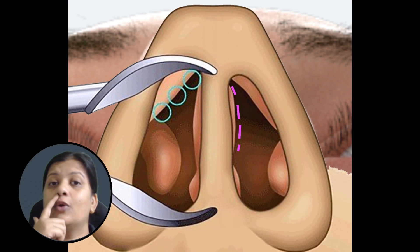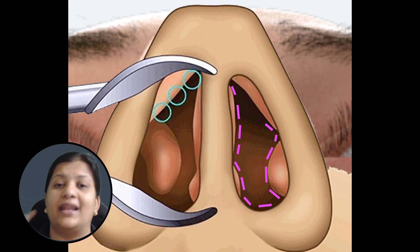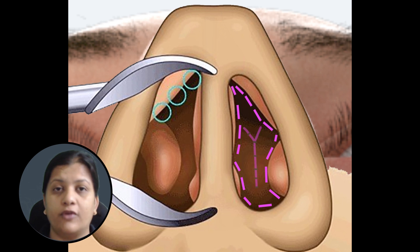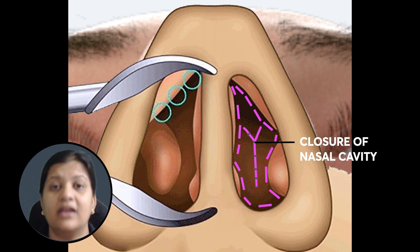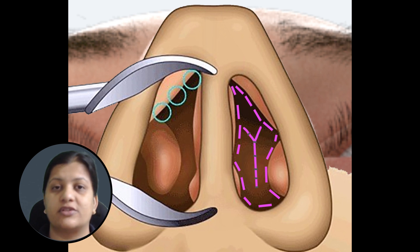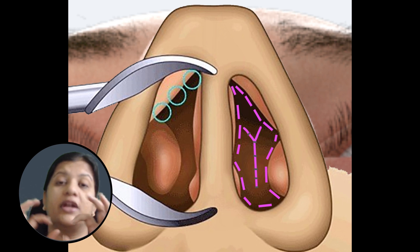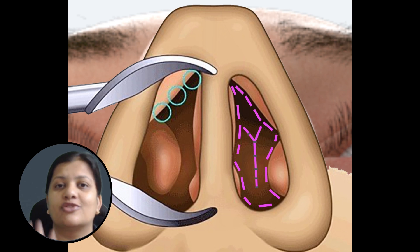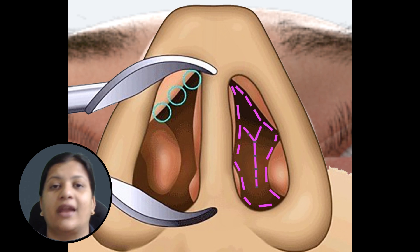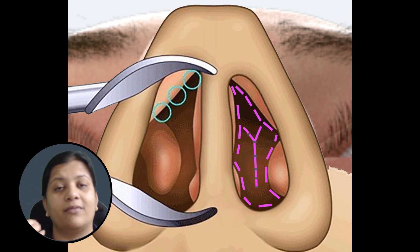Now let's understand the surgical perspective. The first surgery is called Young's operation. In Young's operation, in the vestibule of the nose, we elevate the mucosa from the lateral wall, medial wall, and floor, then suture them in a T-shaped, tri-radiate manner. This closes the nasal cavity completely so that dry air currents do not go inside and the nasal tissue can heal. After six months, the opening of the nasal cavity is re-established.